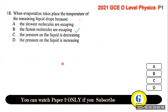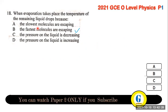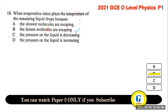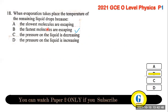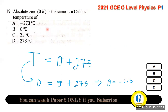Question 18: when evaporation takes place, the temperature of the remaining liquid drops because the fastest molecules at the surface gain kinetic energy, vibrate at high amplitudes, and escape. They leave the slower molecules behind, so the temperature of the liquid falls.